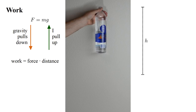A reasonable mathematical definition of the work I do is the product of the force times the distance. If I'm lifting twice the mass through the distance I'm doing twice the work. If I'm lifting the mass through twice the distance I'm also doing twice the work. So the work required to lift the water is mgh.